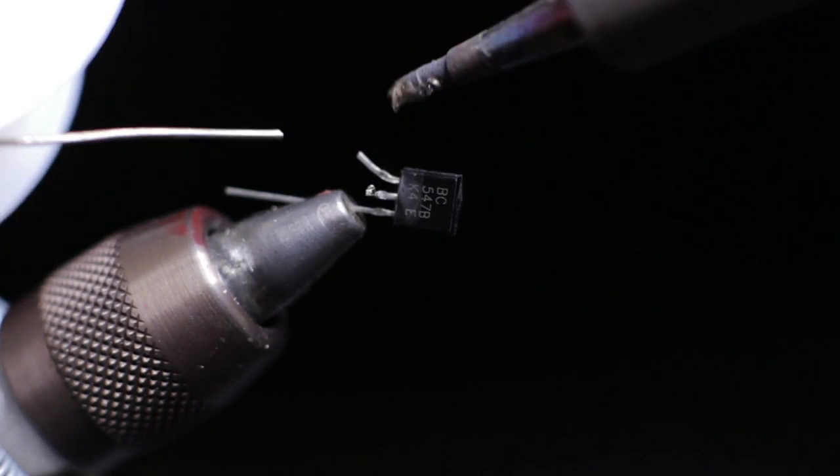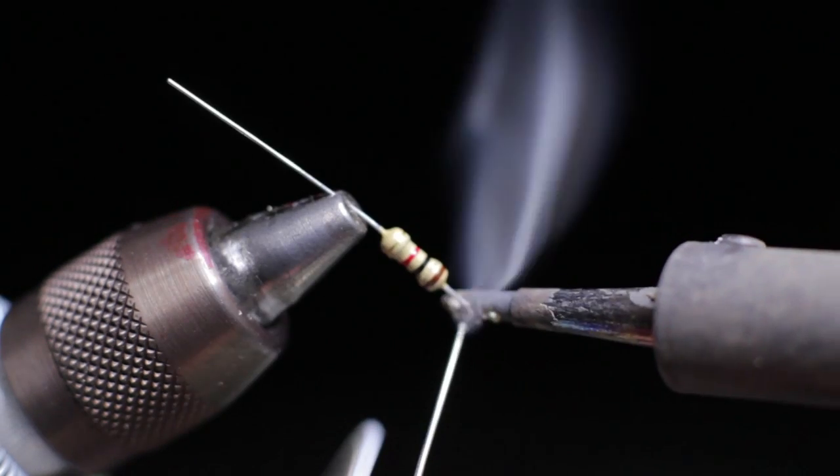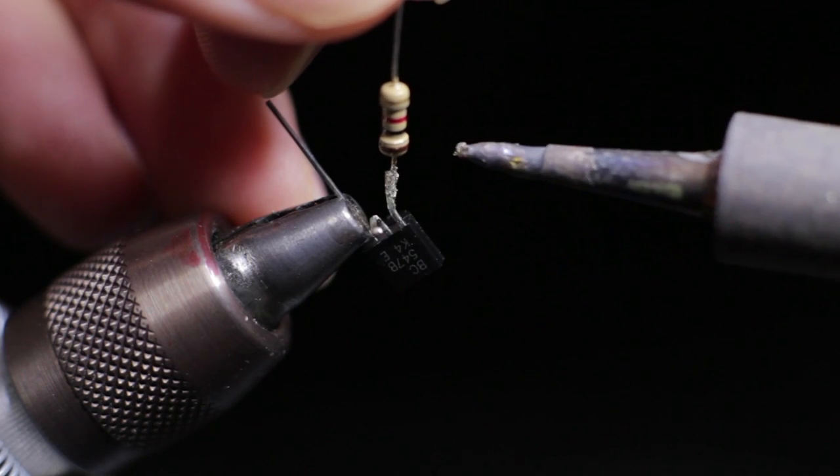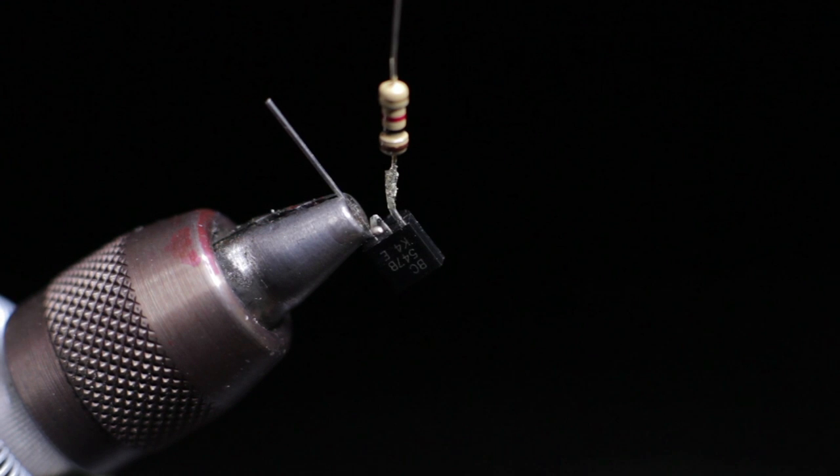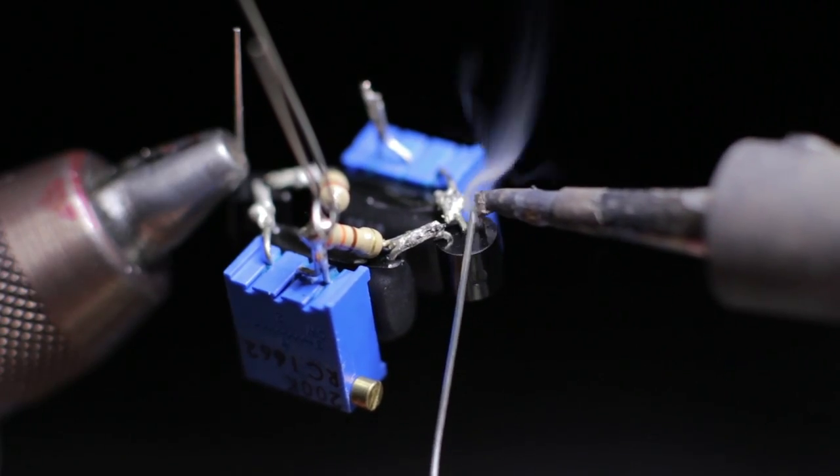This third transistor connected to this 1k resistor is what creates the signal output for the signal wire of the servos.